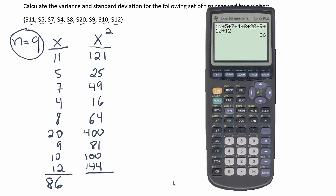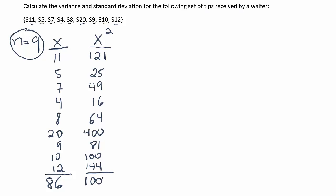Okay, and let's add the other column together now. So we'll have 121 plus 25 plus 49 plus 16 plus 64 plus 400 plus 81 plus 100 plus 144. And when we're done, we get 1000. And again, just check to make sure you entered everything correctly.